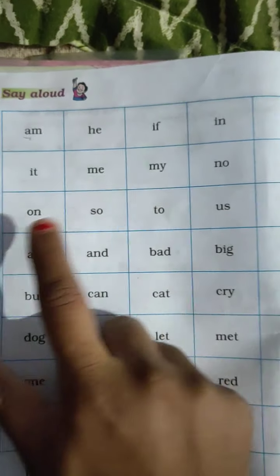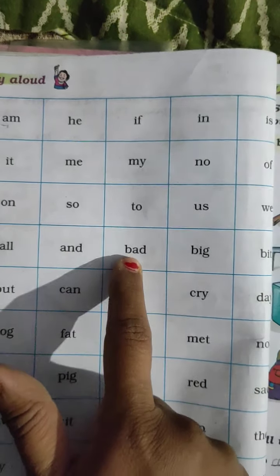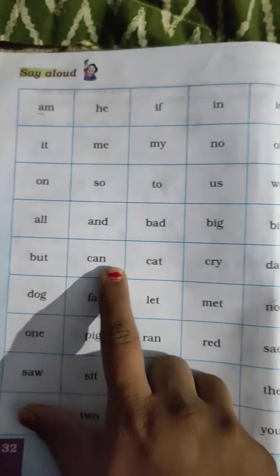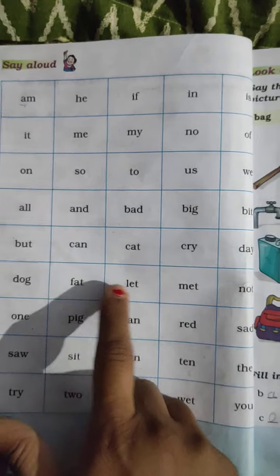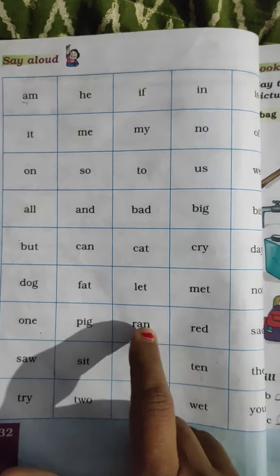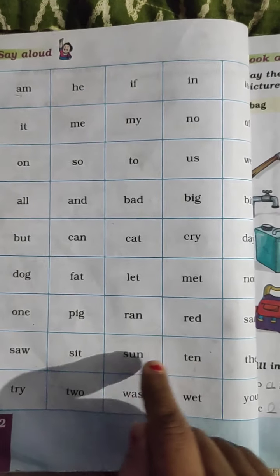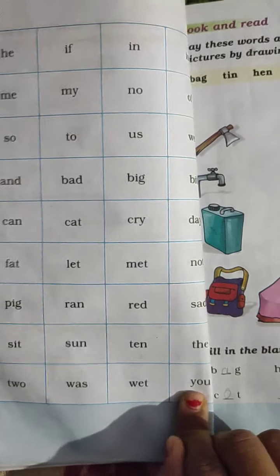Am, he, if, in, is, it, me, my, know, of, on, so, to, us, we. All, and, bad, big, bit. But, can, cat, cry, day. Dog, fat, let, mat, not. One, pig, ran, red, sad. So, sit, sun, tan, dha. Try, to, wash, wet, you.